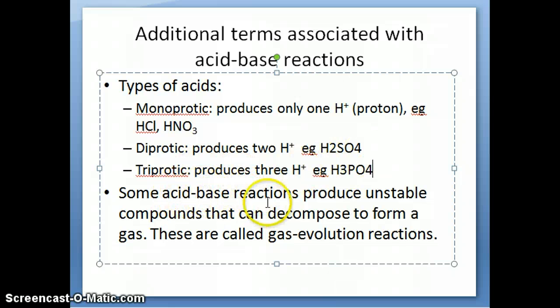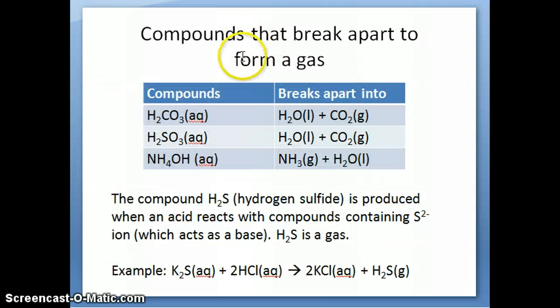Now, another concept related to acid-base reaction is it turns out that some acid-base reactions produce compounds that are unstable on their own. So, they don't stay together. The parts of these compounds don't stay together. But usually, one of them, they would break apart. And one of the products of the compound is a gas. So, when you have acid-base reactions that have this type of property, those are called gas evolution reactions. So, what are some examples of these? There's not that many. And you can just really memorize these as the compounds that would generate those gases.